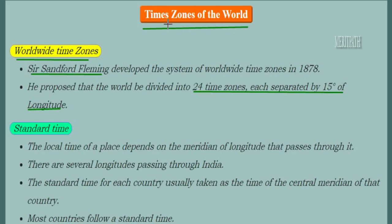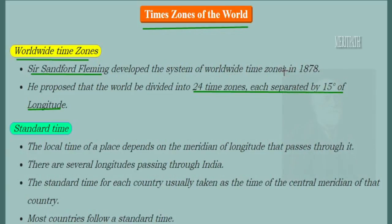Next are the worldwide time zones. The first person to discover them was Sir Sanford Fleming, who discovered the worldwide time zones in 1878. He proposed that the world be divided into 24 time zones, with each one separated by 15 degrees of longitude.